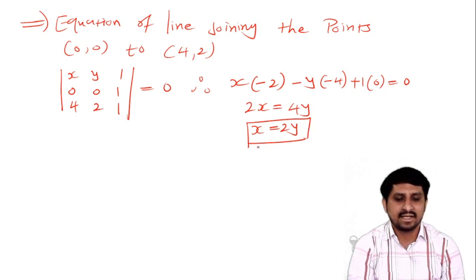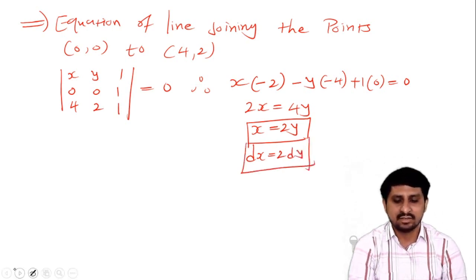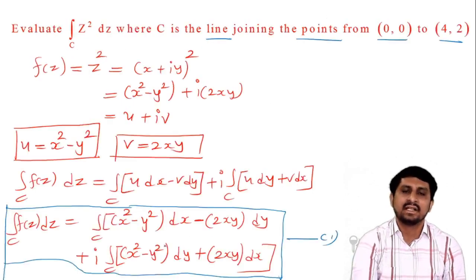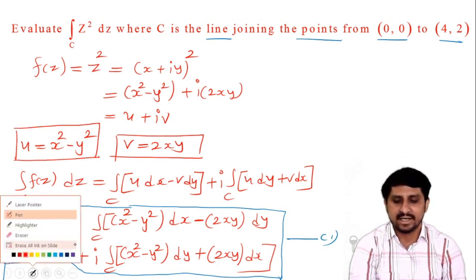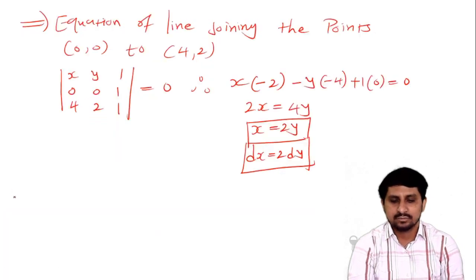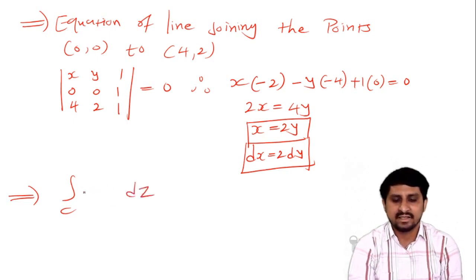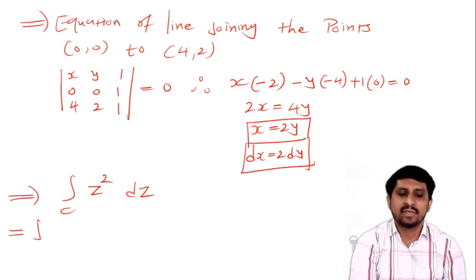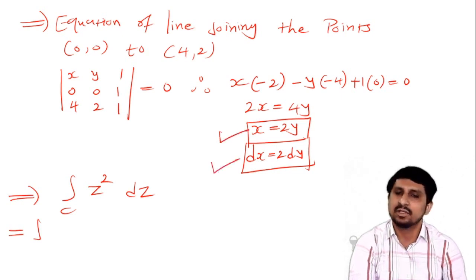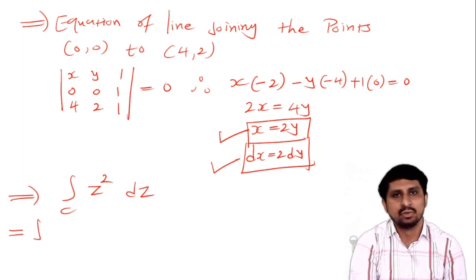Now in equation number 1, instead of x I substitute 2y, and instead of dx I substitute 2dy. Because we convert the whole equation into the form of y, the limits become y going from 0 to 2, since the y-coordinates of the two points are 0 and 2 respectively. So the integration runs from 0 to 2.